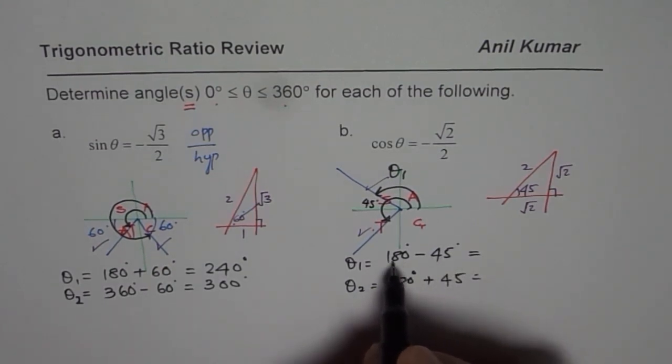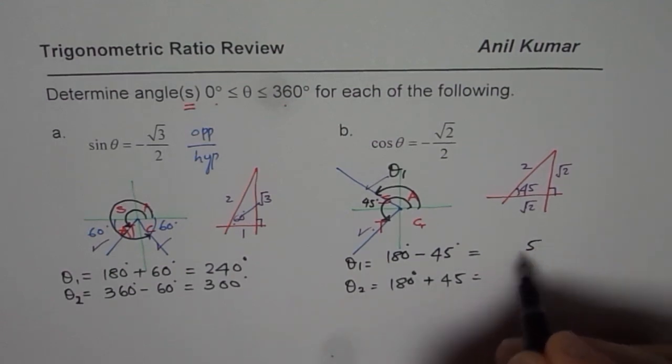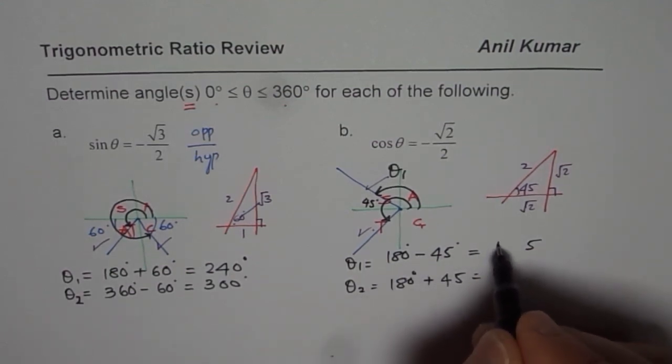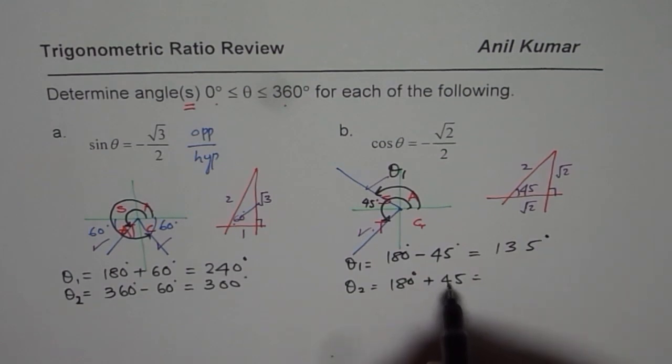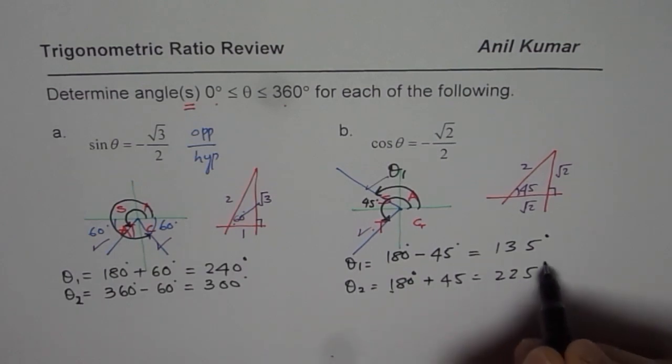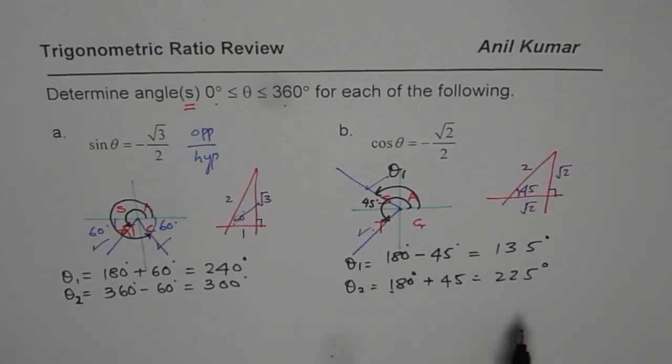When you take away 45 from 180 degrees, you get 135 degrees. And when you add 45, you get 225 degrees. So these are the two solutions for the second part.